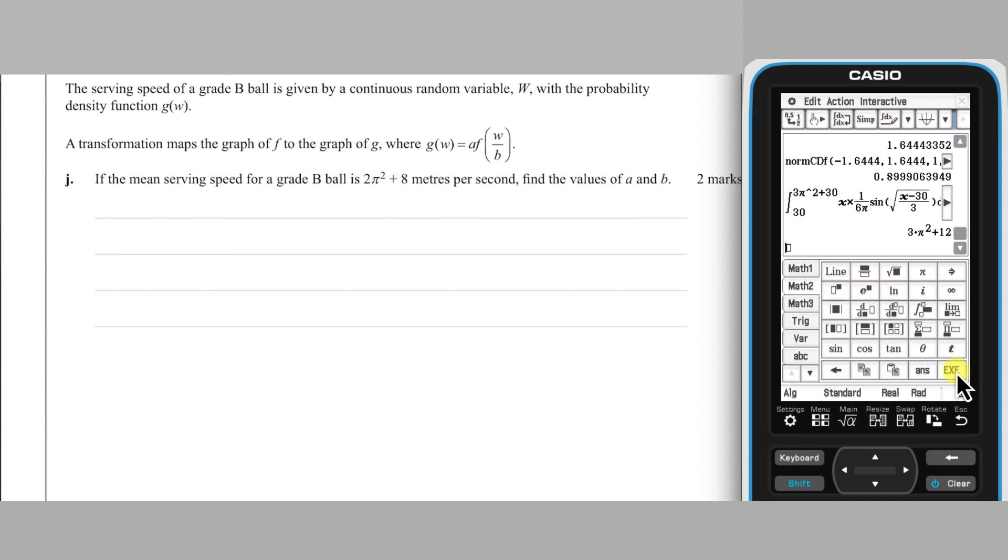For part J, we are introduced to the probability density function G, which is a transform of function F according to this rule. This rule operates on the graph of F and corresponds to a horizontal dilation by factor B and a vertical dilation by factor A. The result of this transformation is the probability density of function G with a mean of 2 pi squared plus 8.